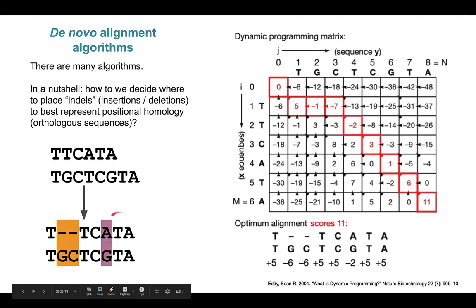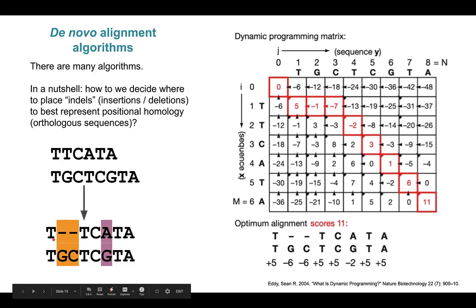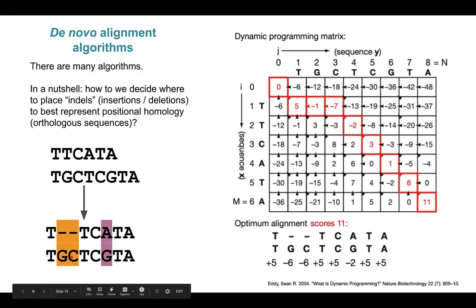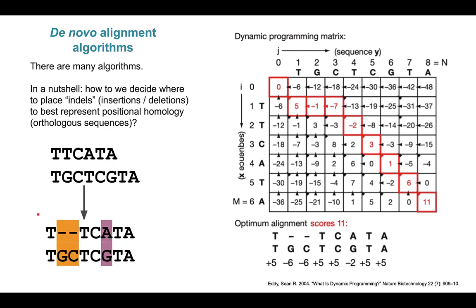An indel is an insertion or deletion. Without directionality from two sequences alone, you could say this sequence has a deletion — it lost a G and a C — or conversely, the other sequence has an insertion, gaining a G and C. Without older or additional sequences in the alignment, we don't know which way this occurred, so we just call it an indel. That set of columns in the alignment is just an indel column.